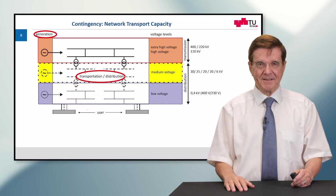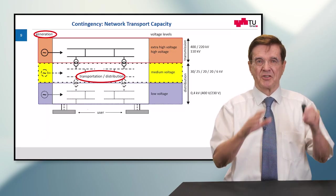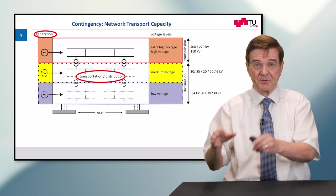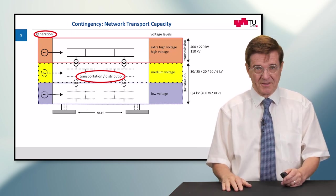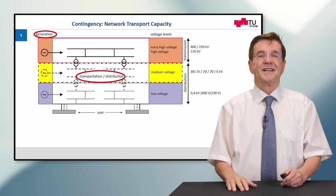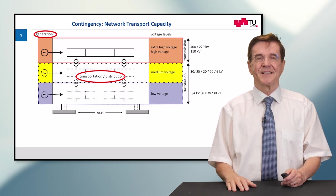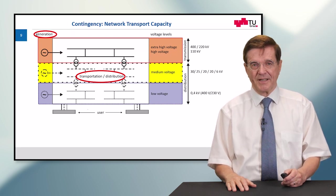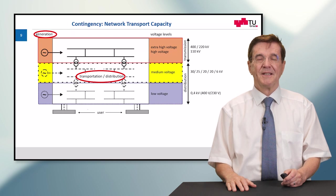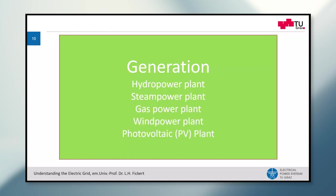The electric grid consists basically of generation, transportation, distribution and us, this is the users of the electricity. And today I want to give you some insight into generation and transportation or distribution. So we start with generation. So there are different ways how to transform primary energy into electrical energy and electrical power. And here I give you a certain selection of power plants.